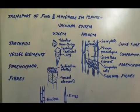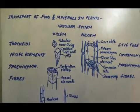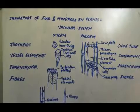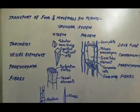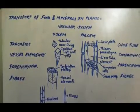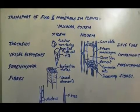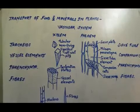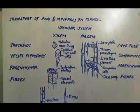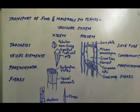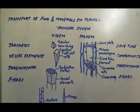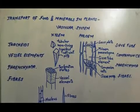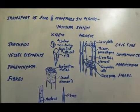Today, we are going to discuss about the transport of food and minerals in plants. In plants, the transport system is mainly needed for two main reasons: one, for transport of water and minerals which are absorbed by the roots from the soil, and for transportation of the food prepared by the leaves to different parts of the plant.